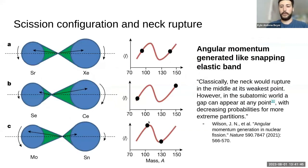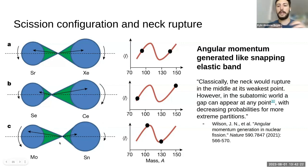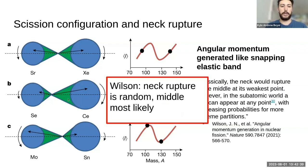A few years ago, there was a really big paper in Nature that used a great experiment to indirectly measure the spins — the intrinsic angular momentum — of individual fission fragments. In this model, we treat our neck like an elastic band and say classically it would rupture right in the middle at its weakest point. But with quantum mechanics there's some uncertainty, and in this paper they propose that the neck rupture is random but focused on the middle — most likely to rupture right in the middle, but it is a random process.